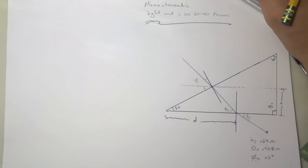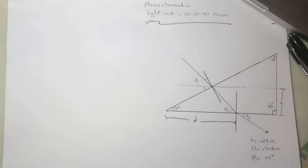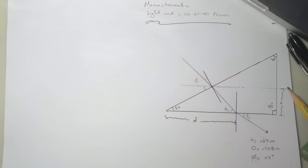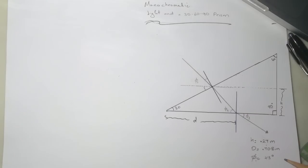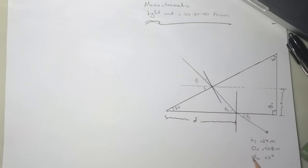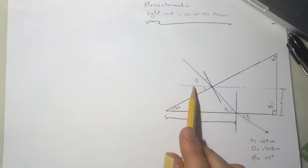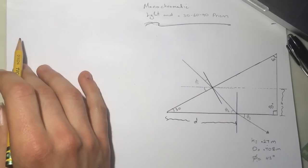Hi guys, this is another tutorial for monochromatic light and a 30-60-90 prism. I'll draw a diagram so we can keep track of what I'm doing. You can read the full question in the description below. They gave us H, which is the distance from here to here; D is from here to here; and theta1 is 43 degrees.